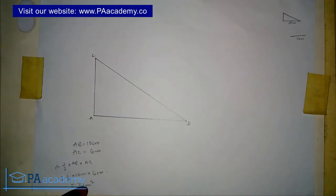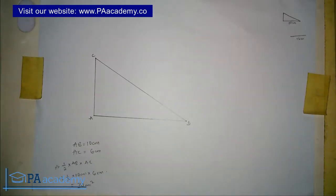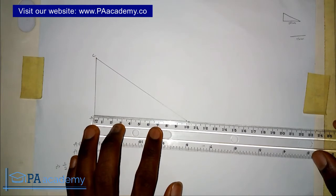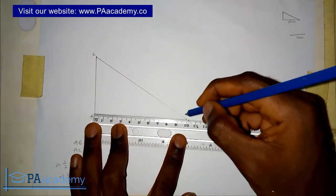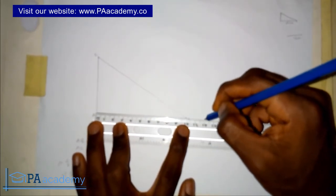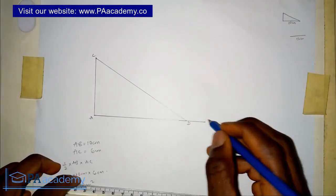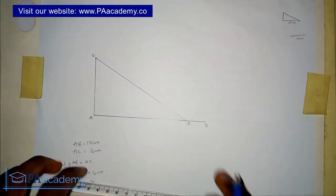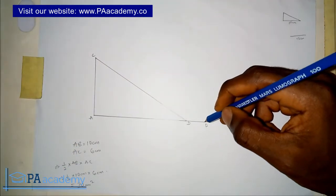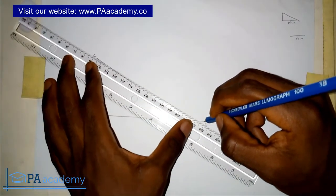Now if I draw a triangle of the same area — 30 centimeters squared — but with a different base of 12 centimeters, here's how to proceed. We extend the base to 12 centimeters, which means adding 2 more centimeters. Let's call this new point D. We now have the base of the new triangle. The next step is to join point D to point C using a faint construction line.